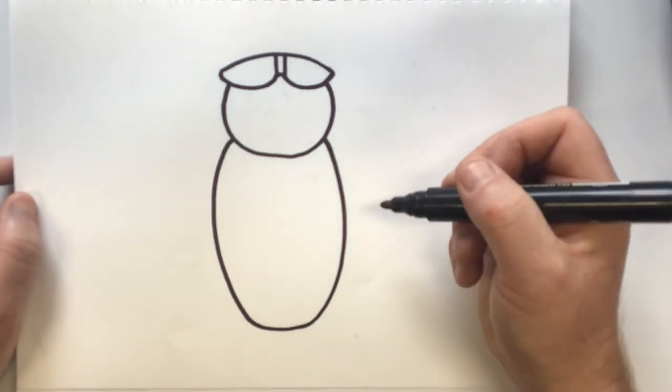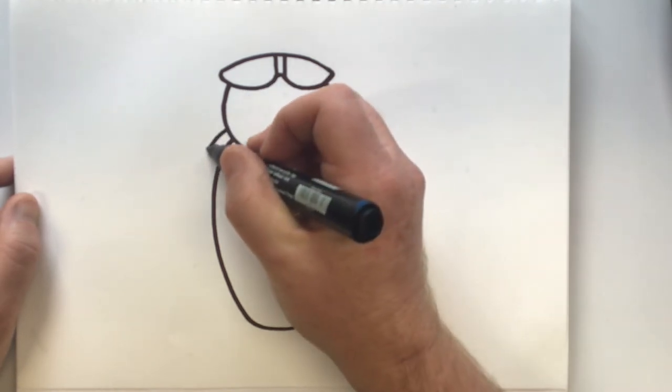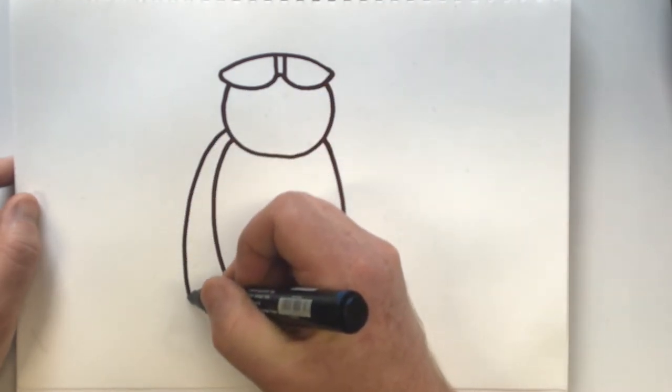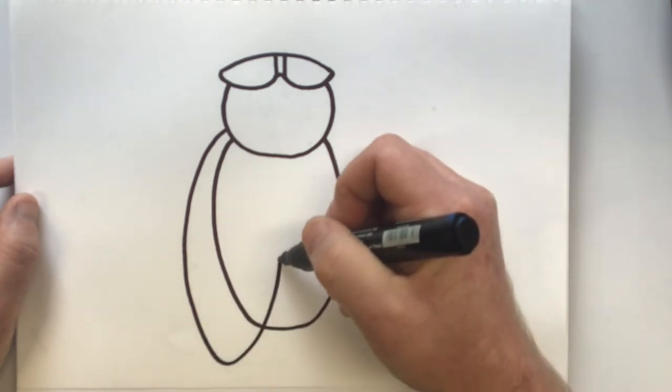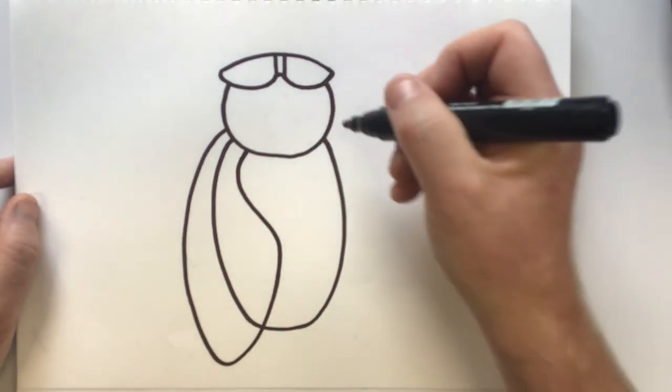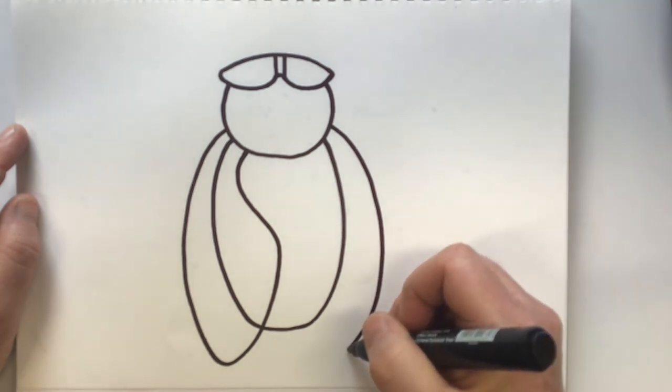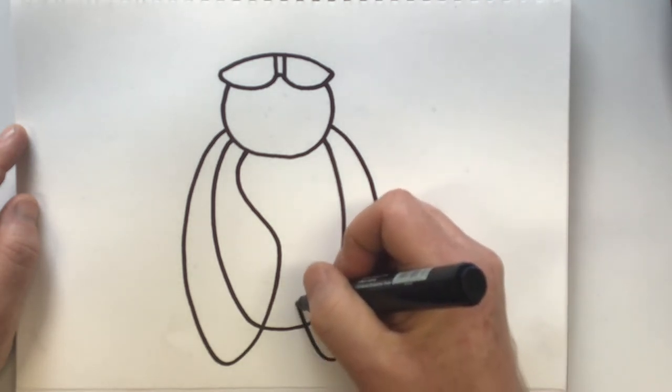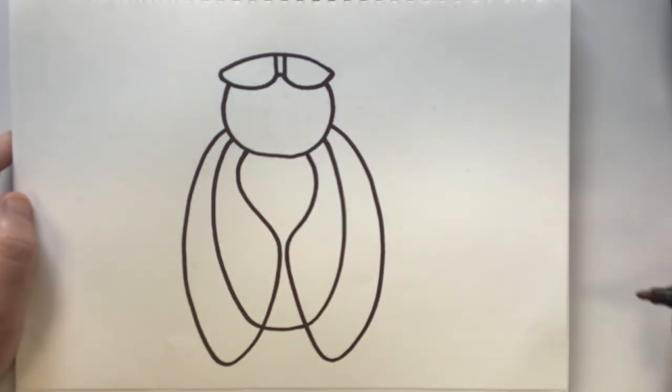Okay, next I'm going to put on the wings. Now the wings are a little bit tricky. It's going to come down, curve around, up and curve in like this. Let's try it on the other side. Let's go down, around, curve it up, curve it in, and then we have a wing.